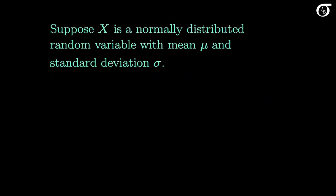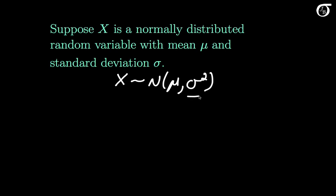Suppose X is a normally distributed random variable with mean mu and standard deviation sigma. We can write this as X is distributed normally with a mean of mu and a variance of sigma squared. This isn't universal notation and some sources write the standard deviation as the second term, so we have to be a little bit careful. But my notation with the second term representing the variance is pretty common.